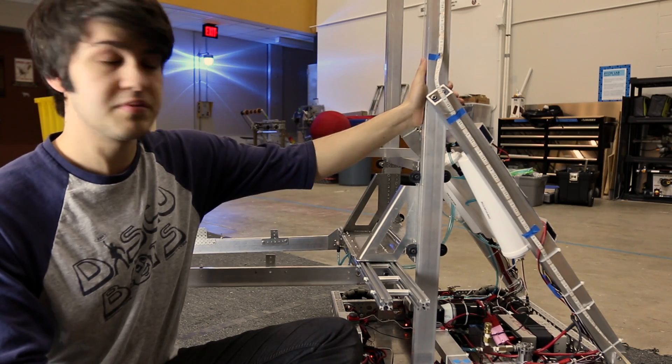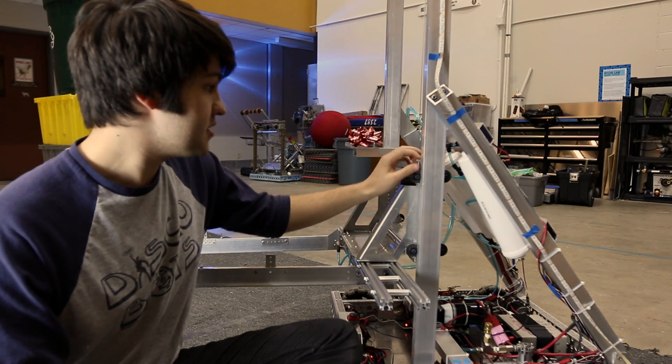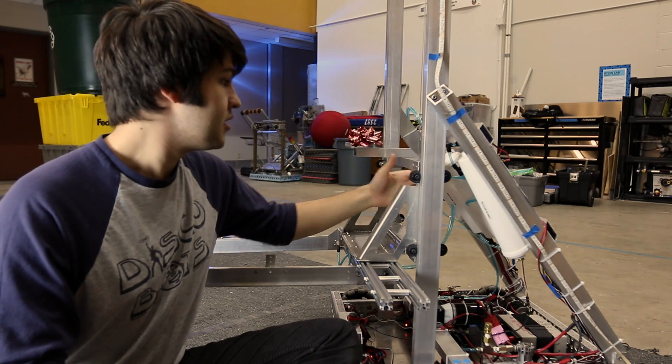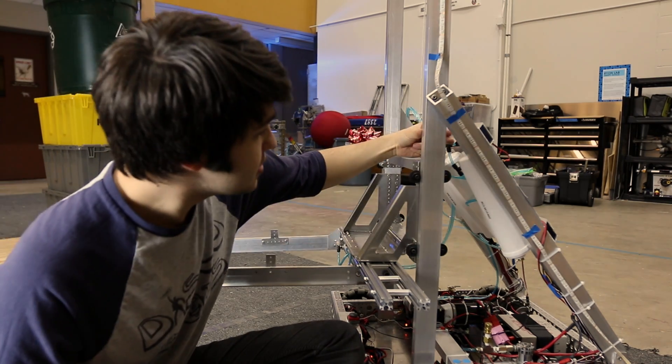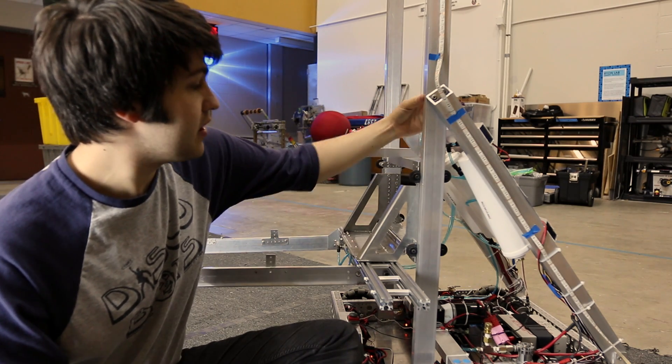It's sturdier - our lift is probably sturdier than the drivetrain at this point. These roll really well. You just put them on some two-by-one, and the little wheels on here sort of keep you lined up.